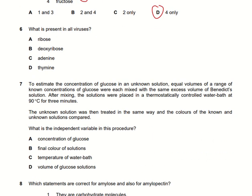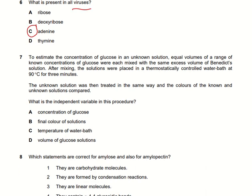What is present in all viruses — ribose, deoxyribose, adenine, or thymine? Adenine is always present in all viruses because all viruses contain DNA, and DNA contains adenine. So adenine is present in all viruses.